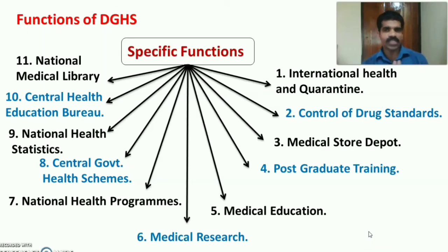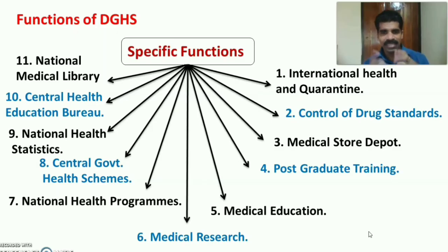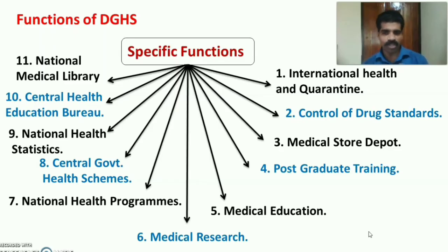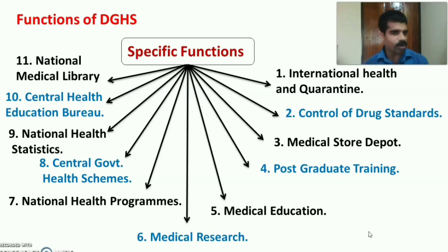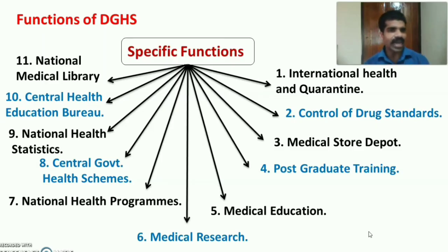There are 11 specific functions of the DGHS: (1) International Health and Quarantine; (2) Control of Drug Standards; (3) Medical store reports to supply medical appliances to all states; (4) Promotion of postgraduate training; (5) Promotion of medical education; (6) Promotion of medical research; (7) Planning and making strategy for national programs; (8) Central Government Health Schemes for central government employees; (9) National Health Statistics; (10) Central Health Education Bureau for IEC programs; and (11) Maintaining and organizing the National Medical Library.